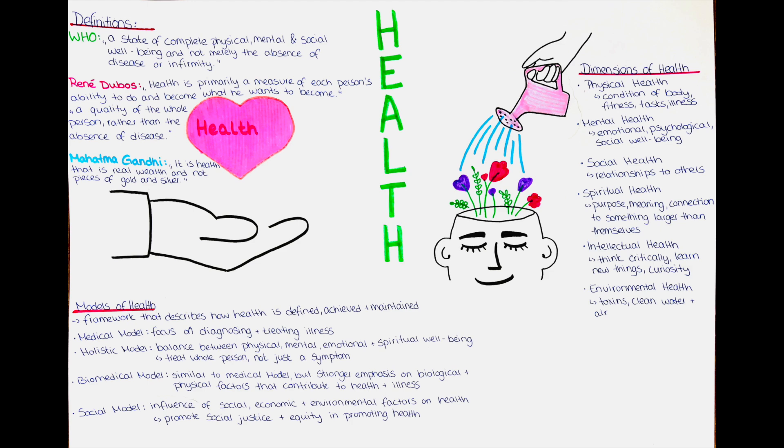Mahatma Gandhi, a political and spiritual leader, believed that health was more than just physical well-being. He viewed health as a holistic concept that encompassed mental, emotional and spiritual aspects, as well as social and environmental factors. He also emphasized the importance of individual responsibility in maintaining health, as well as the need for social and economic justice to address underlying determinants of health. Mahatma Gandhi wrote that it is health that is real wealth and not pieces of gold and silver.